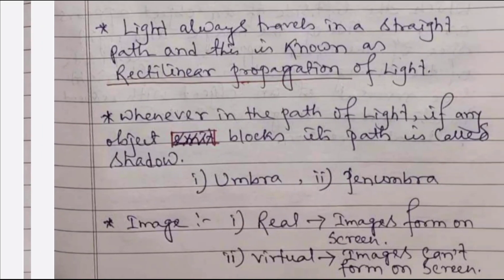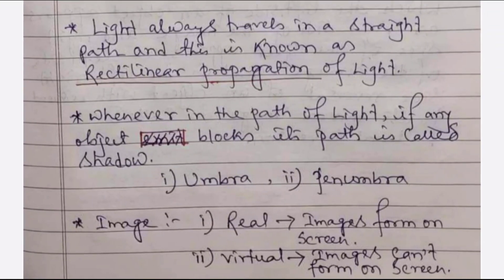Light always travels in a straight path, and this property of light is known as rectilinear propagation of light. Many activities exist to prove this property. Whenever any object blocks the path of light, it forms a shadow. It has two types: one is umbra and another is penumbra.